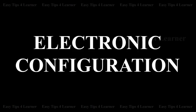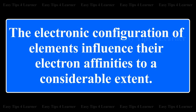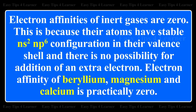Electronic Configuration. The electronic configurations of elements influence their electron affinities to a considerable extent. Electron affinities of inert gases are zero, because their atoms have a stable NS2-NP6 configuration in their valence shell and there is no possibility for the addition of an extra electron.